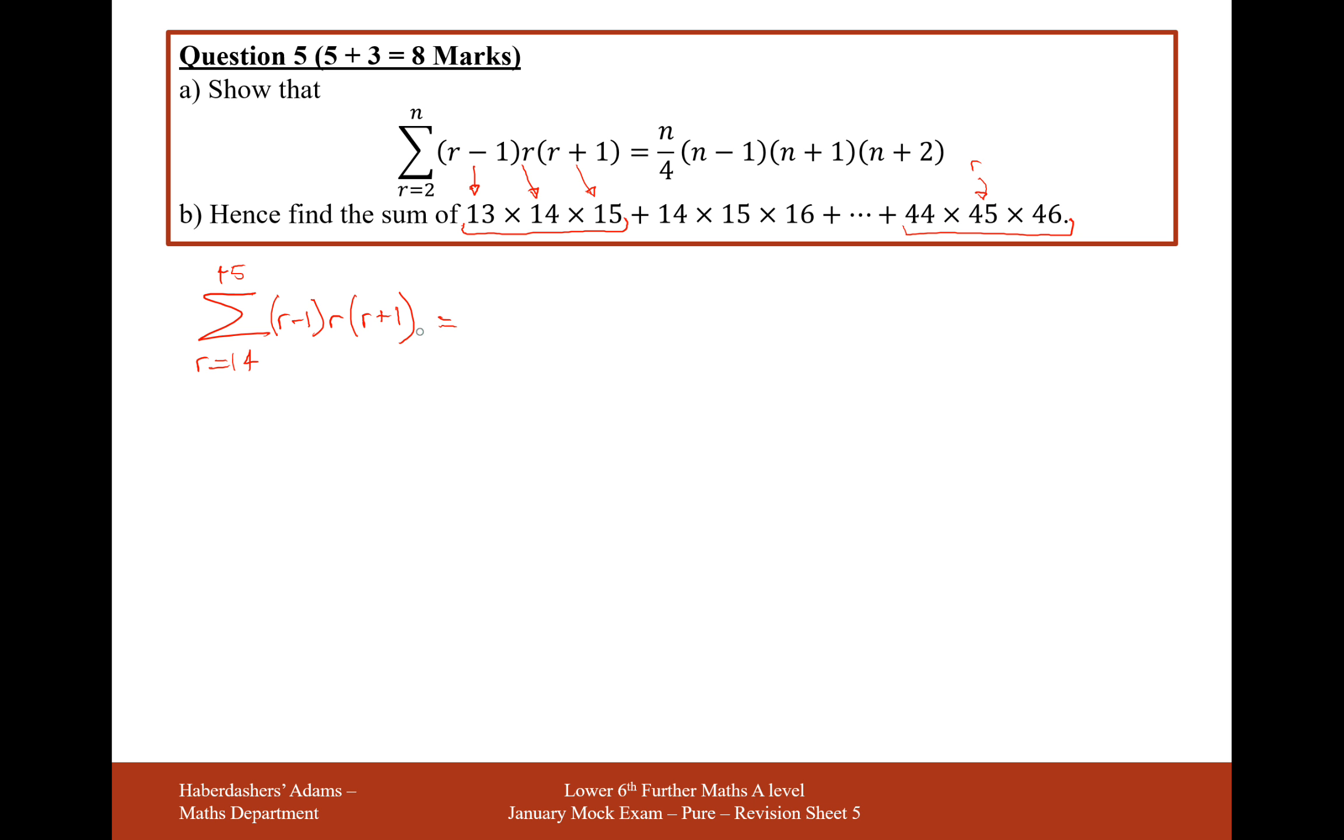What we've got here is a summation from 14 up to 45. Now, the only way we can use our formula here is if our formula starts down at 2 and goes up to n. So what we're going to have to do is summate all of these terms up to 45. Starting down at 1 or 2, it doesn't really matter because the first term is 0 anyway.